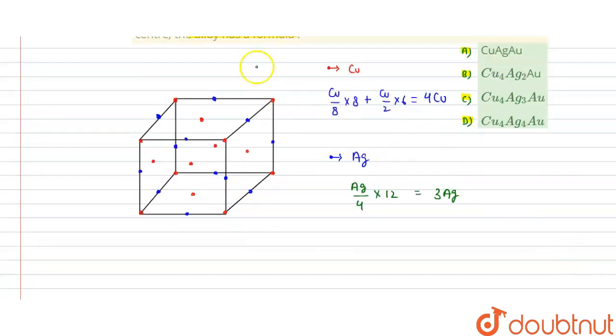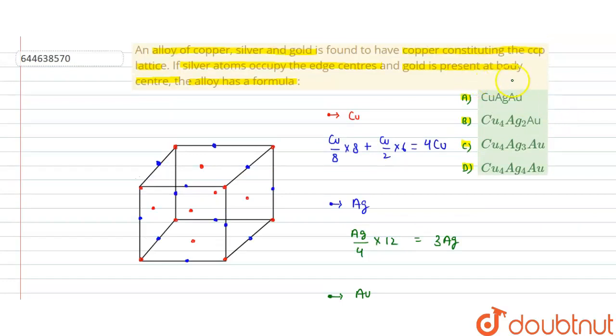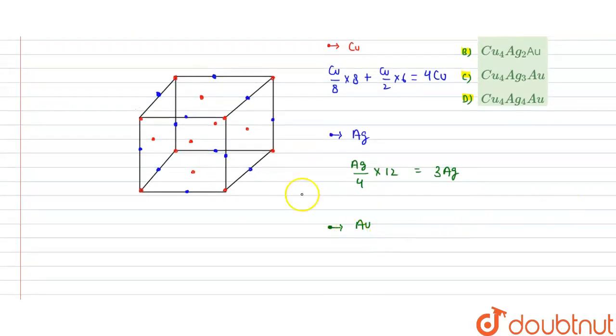Now take another thing - we use green for gold. So gold is at the body center. At body center only one molecule is here. So this is the condition, only Au.